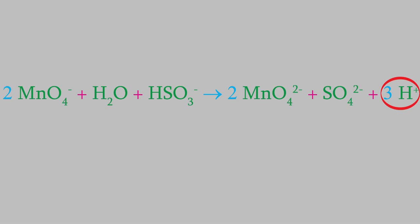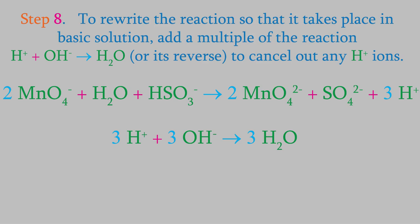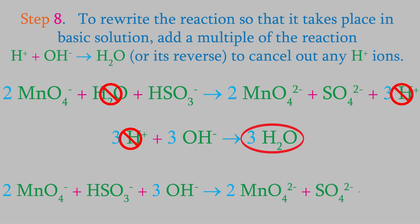But what if it wasn't a basic solution? In that case, we'd have one more step to do. We need to add a multiple of this reaction in order to make the hydrogens cancel out. Since there are 3 hydrogen ions, we'll add 3 of these reactions. That makes the hydrogens drop out. Notice that one of the water molecules also cancels out the water that was already in the reaction. When we add the reactions, we get 2 permanganate ions, a bisulfite ion, and 3 hydroxide ions on the left, and 2 manganate ions, a sulfate ion, and 2 water molecules on the right.